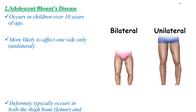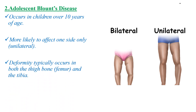The adolescent type of Blount's disease occurs in children over 10 years of age and is more likely to affect one side only, unlike the infantile type. Deformities typically occur in both the thigh bone or femur and the tibia.